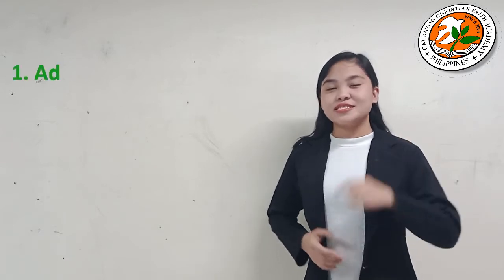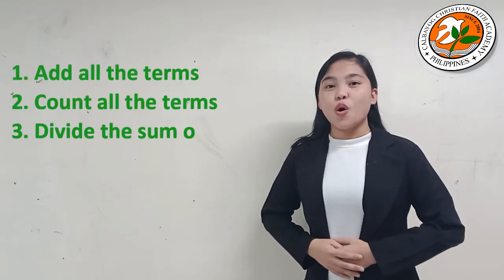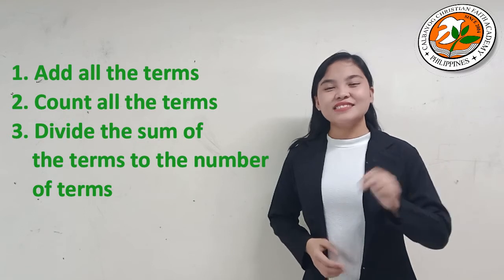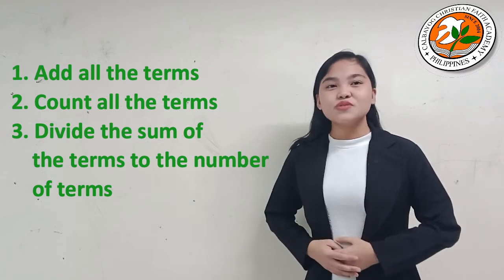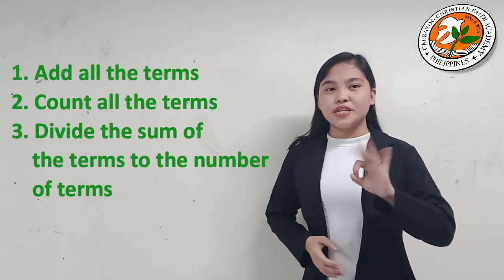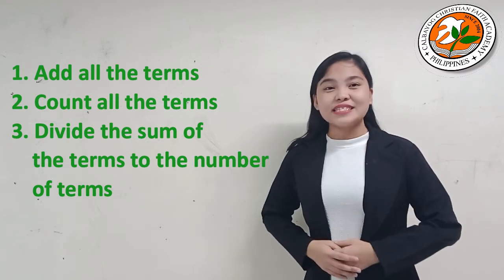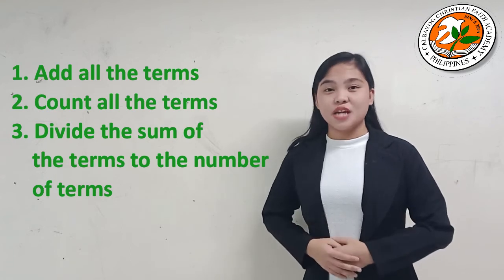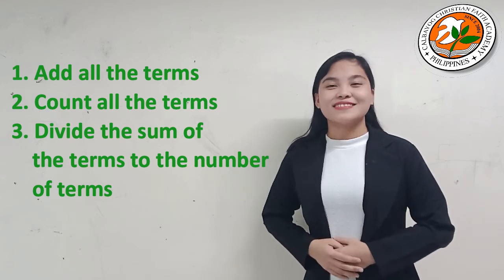In getting the simple average, you need to: first, add all the terms; second, count all the terms; and third, divide the sum of the terms by the number of terms.